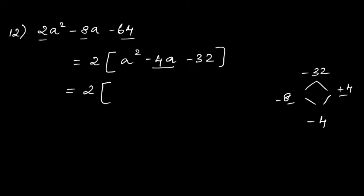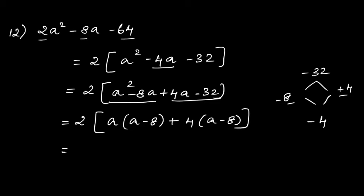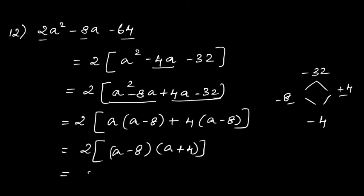Replace -4a with -8a + 4a, so we get a²-8a+4a-32. Write 2 as it is. From the terms a²-8a, take a as common to get a(a-8). From the next two terms 4a-32, take 4 as common to get 4(a-8).